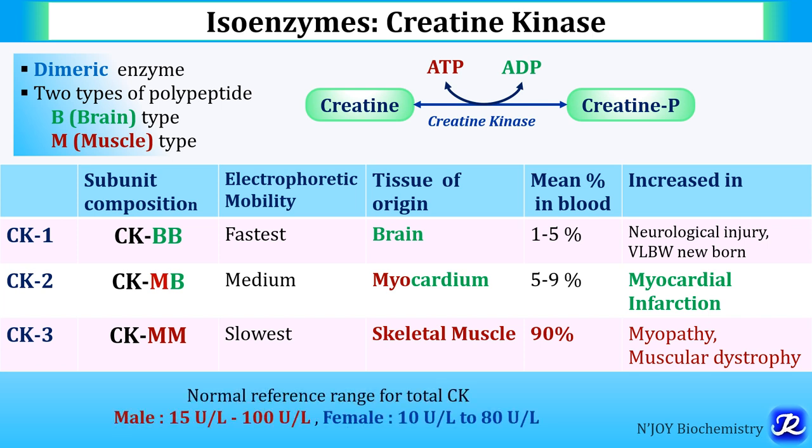The normal reference range for total CK is 15–100 units per liter in males and 10–80 units per liter in females. CK value in serum increases in myocardial infarction and starts to rise within 3 to 6 hours of infarction, making its estimation very useful to detect early cases. CKMB is the key diagnostic isoenzyme for myocardial infarction, while CKMM is increased in myopathy or muscular dystrophy.